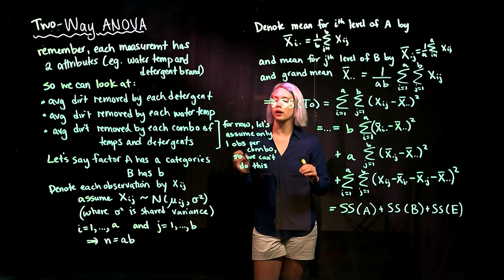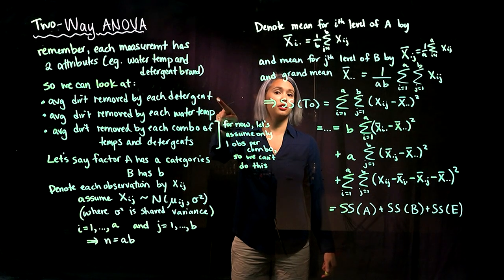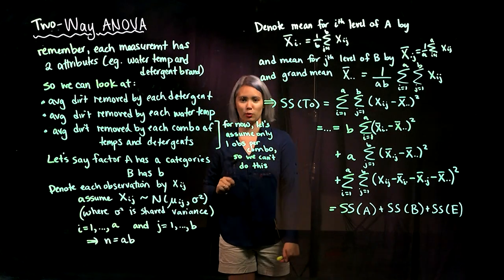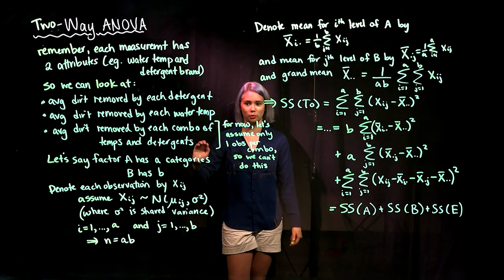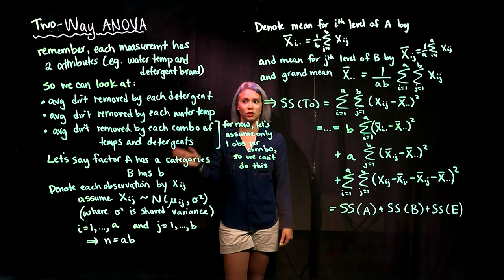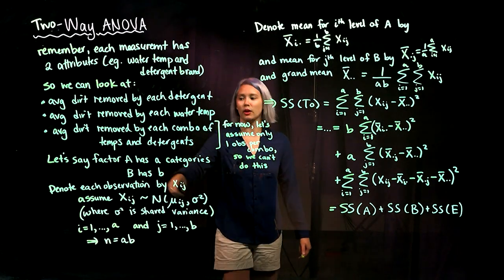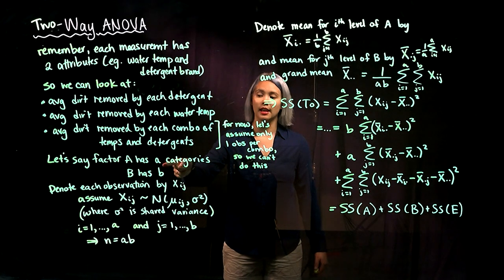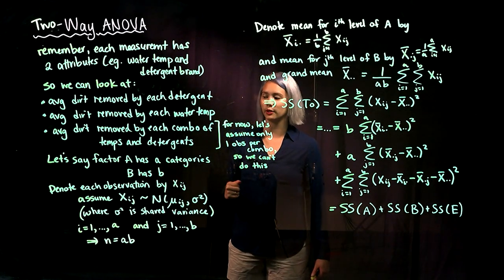For now, we're going to set things up so that we can look at the average dirt removed by each detergent and the average dirt removed by each water temperature. To generalize, let's say we have two factors — not just water temp and detergent brand — but Factor A and Factor B. Factor A has A categories or levels, and Factor B has B categories or levels.